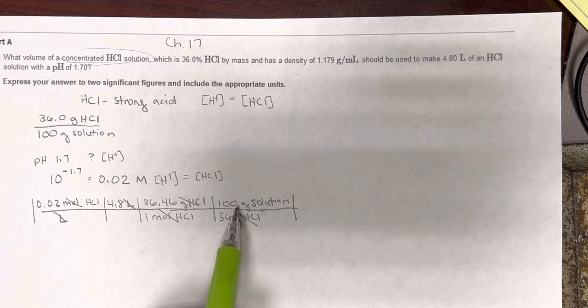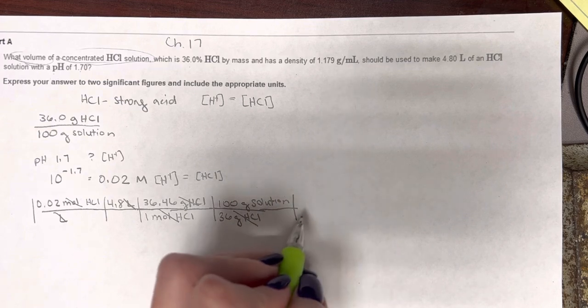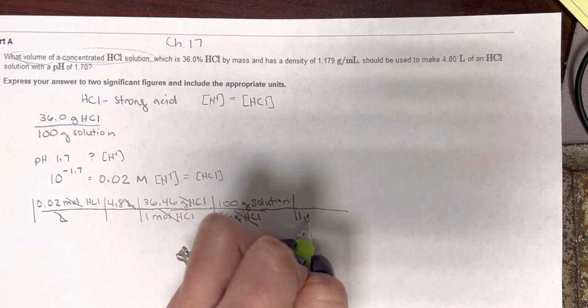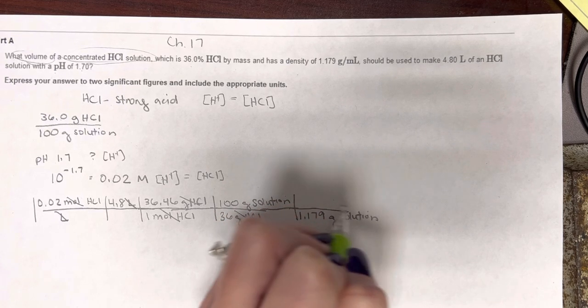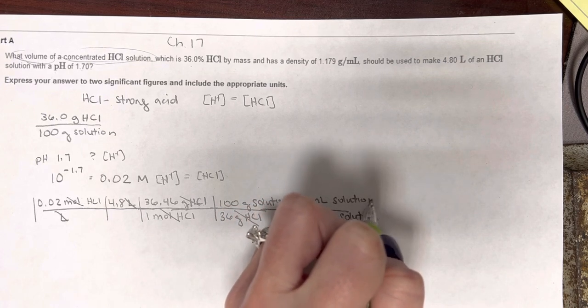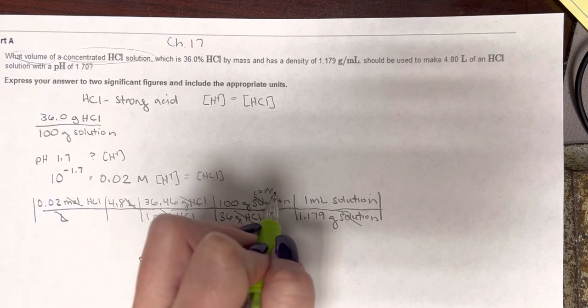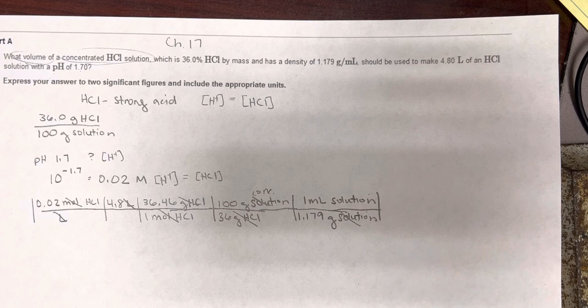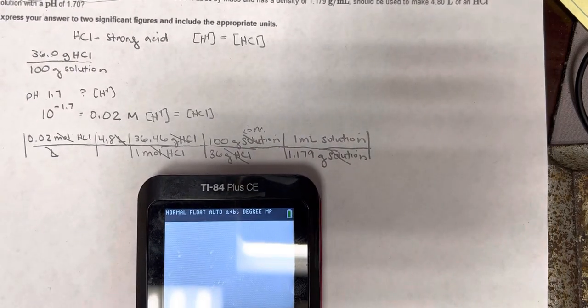But we don't want grams of the solution. We want volume. So now let's plug in our density here. The density tells us that 1.179 grams of solution per 1 milliliter of solution. I'm going to scoot this up, so hopefully you can see me put this in the calculator.